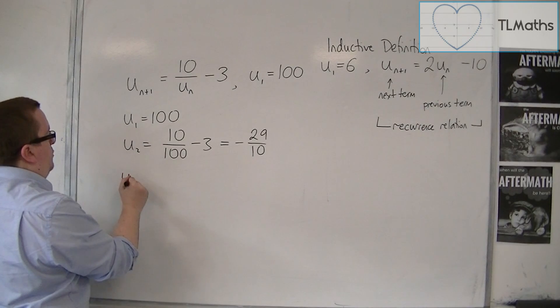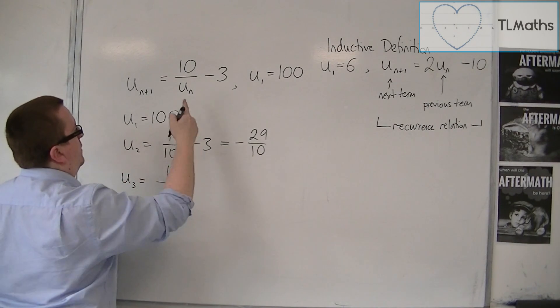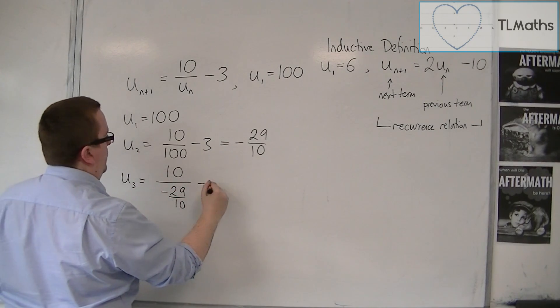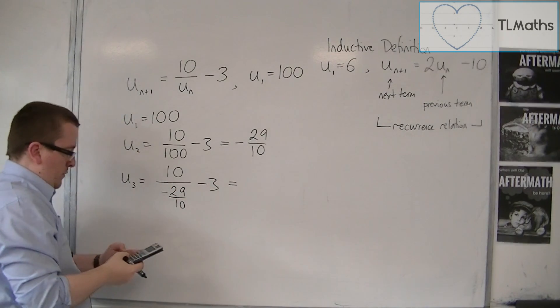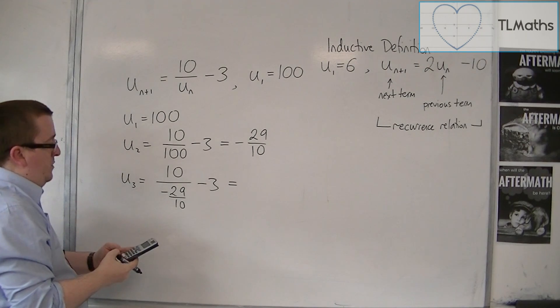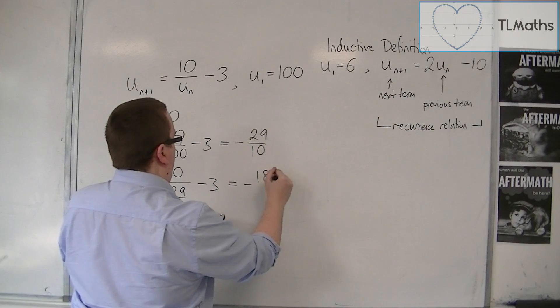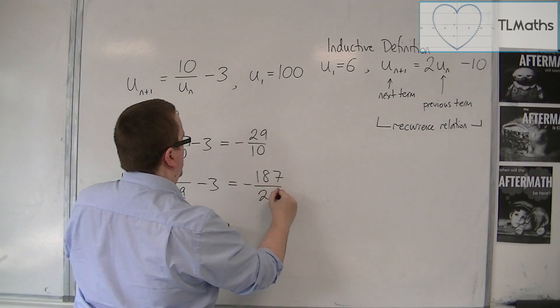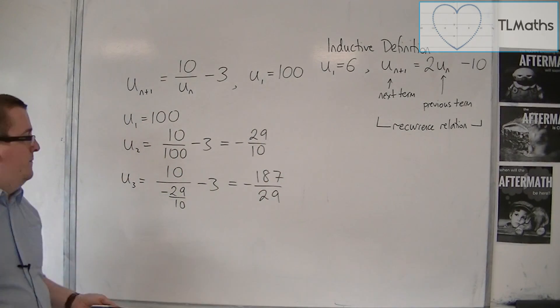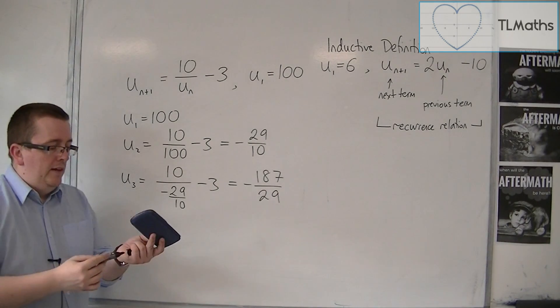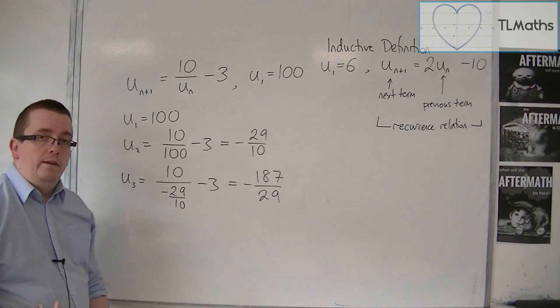Then U_3 is 10 over the previous term, take away 3. So, 10 divided by the previous term, take away 3, and that gets me minus 187 over 29. And I could then calculate U_4, U_5, U_6, and so on in exactly the same way.